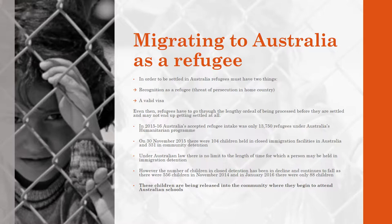In order to migrate and then eventually settle in Australia, a refugee must have recognition as a refugee and a valid visa. Even still, refugees have to go through the lengthy ordeal of being processed before they are settled and may not end up getting settled at all. In 2015-16, Australia's accepted refugee intake was only 13,750 refugees under Australia's humanitarian program.